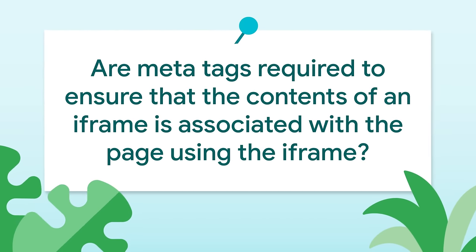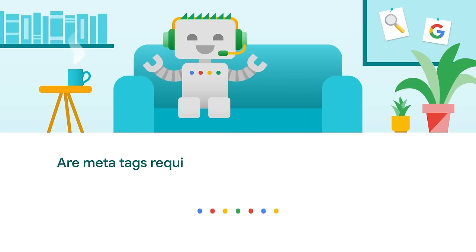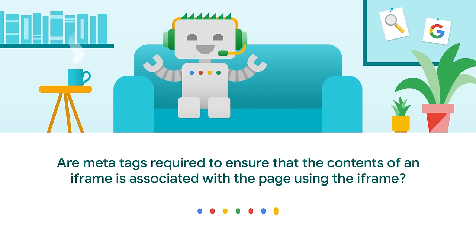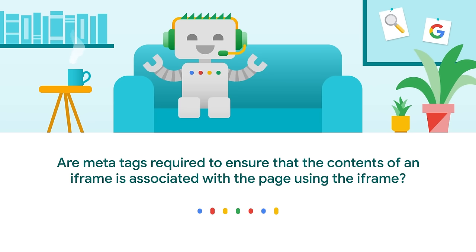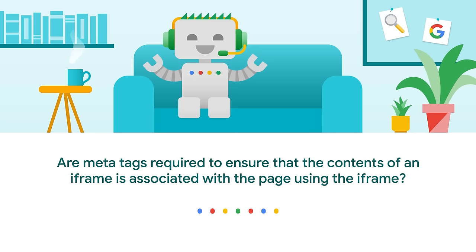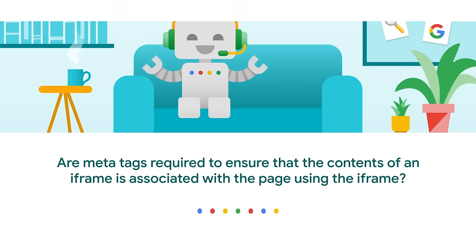Are there any meta tags required to ensure that the contents of an iframe are associated with the page using the iframe and not the original page? Let's assume a primary page is embedding a subpage with an iframe element. Our systems would try to associate the subpage's content as part of the primary page for indexing, but it's not guaranteed since both are also normal HTML pages. If you want to make sure the subpage is only ever indexed as part of the primary page, you can use a combination of noindex plus index-if-embedded robots meta tags on the subpage. On the other hand, if you want to make sure the subpage is never indexed as part of the primary page, you can use the appropriate X-Frame-Options in the HTTP header to prevent embedding of the iframe elements.